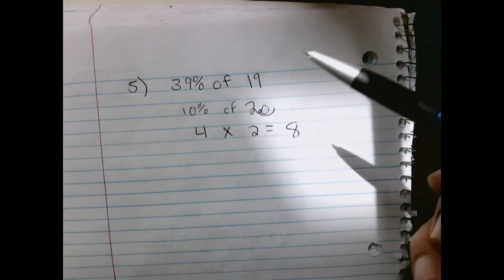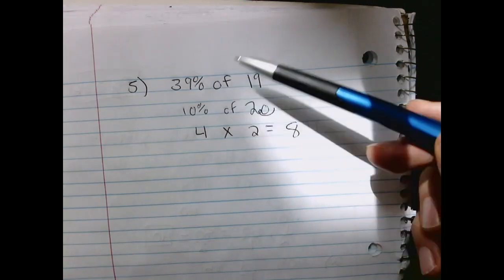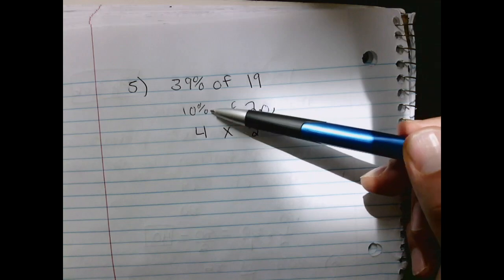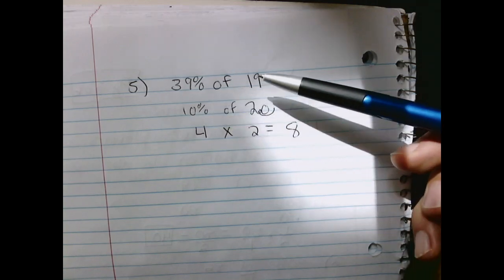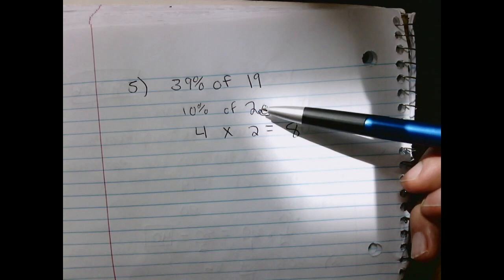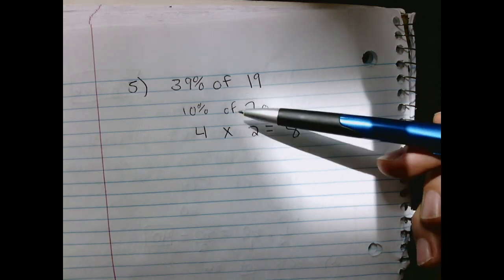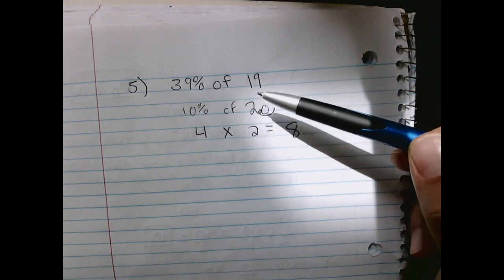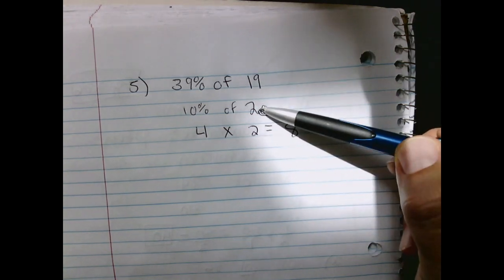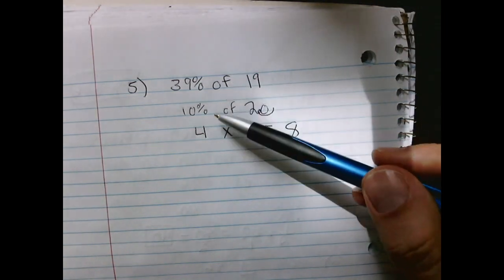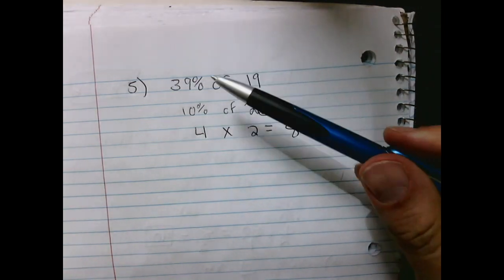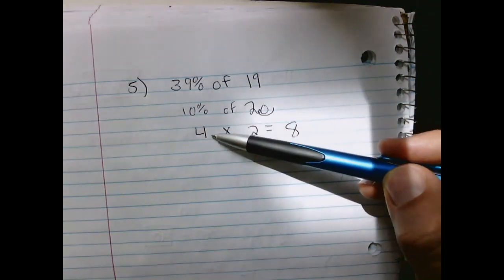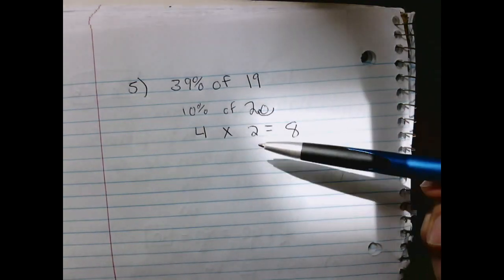So reviewing these steps again, the percentage is bigger than 10, so we're going to estimate by 10%. We have 19, so we're going to turn that into 20. 10% times 20, we end up with 2. Then because we weren't trying to find 10% of 20, we were trying to find 39% of 19, we do that 4 times. 4 times 2 is 8.